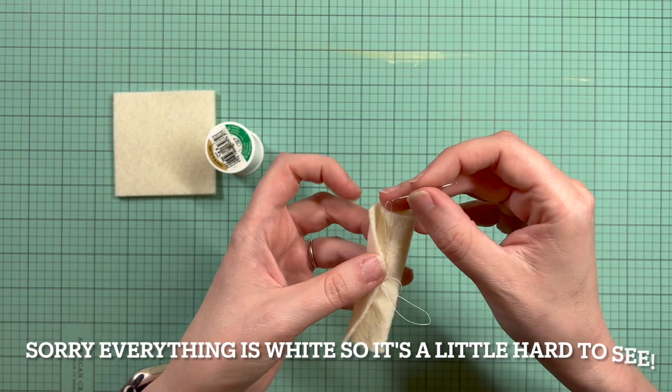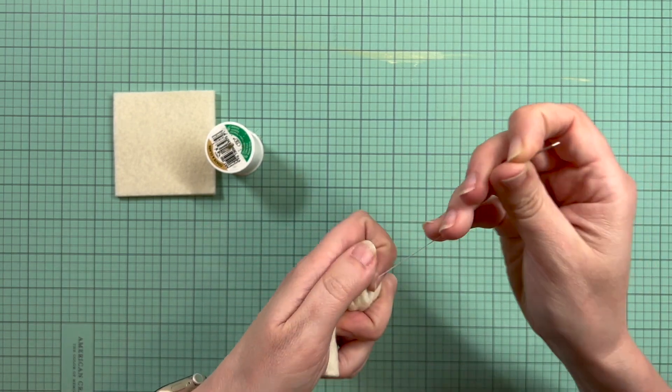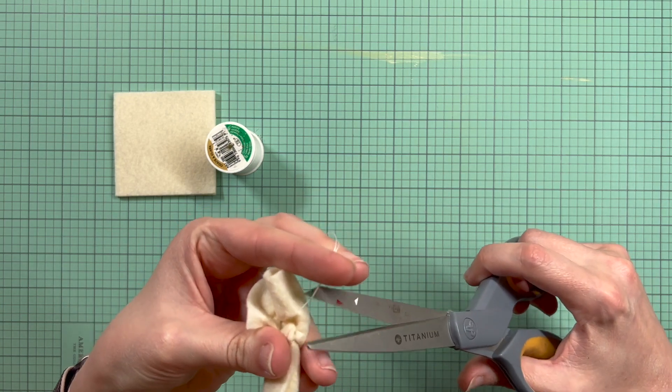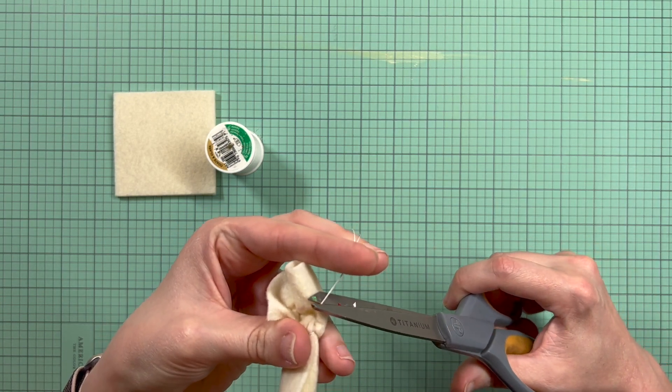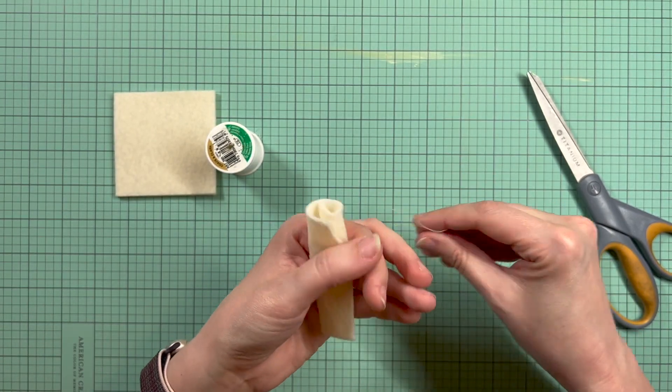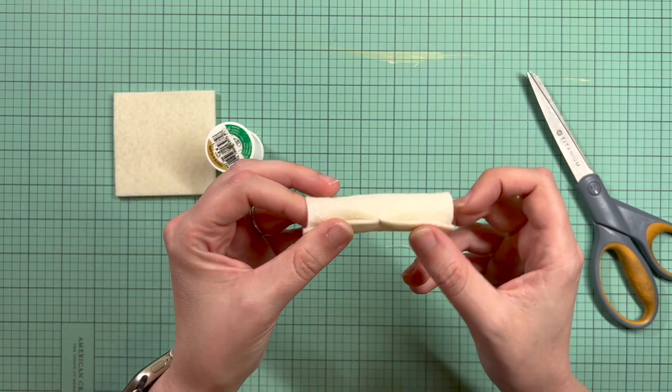So then once I've pulled it up a little ways from the knot, I'm going to pull it really tight and then cut it close to the edge of the fabric. And then when I pull it tight, my end of my thread is inside the diploma. So there is that.